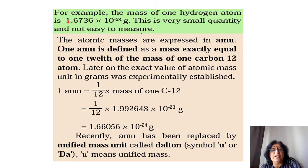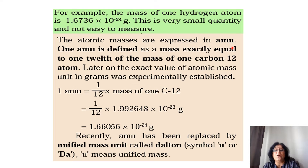For example, the mass of one hydrogen atom is 1.6736 × 10⁻²⁰ grams — a very small quantity and not easy to measure. So atomic masses are generally expressed in AMU, which stands for atomic mass units. Atomic mass unit is defined as a mass exactly equal to 1/12th of carbon-12.